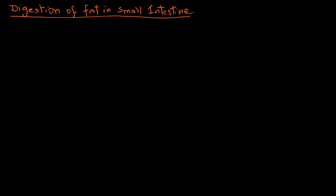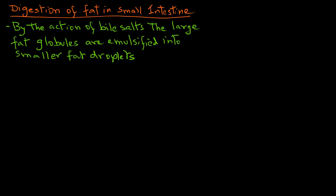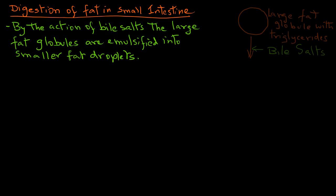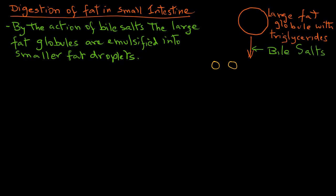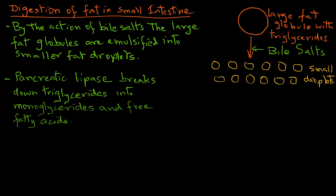The digestion of the large fat globules that contain the triglycerides begins in the duodenum by the action of bile salts. These fat globules are emulsified into smaller fat droplets because of the interactions with bile. As we can see in this figure, several small droplets are created, which increases the surface area to allow pancreatic lipase to further break down the triglycerides.